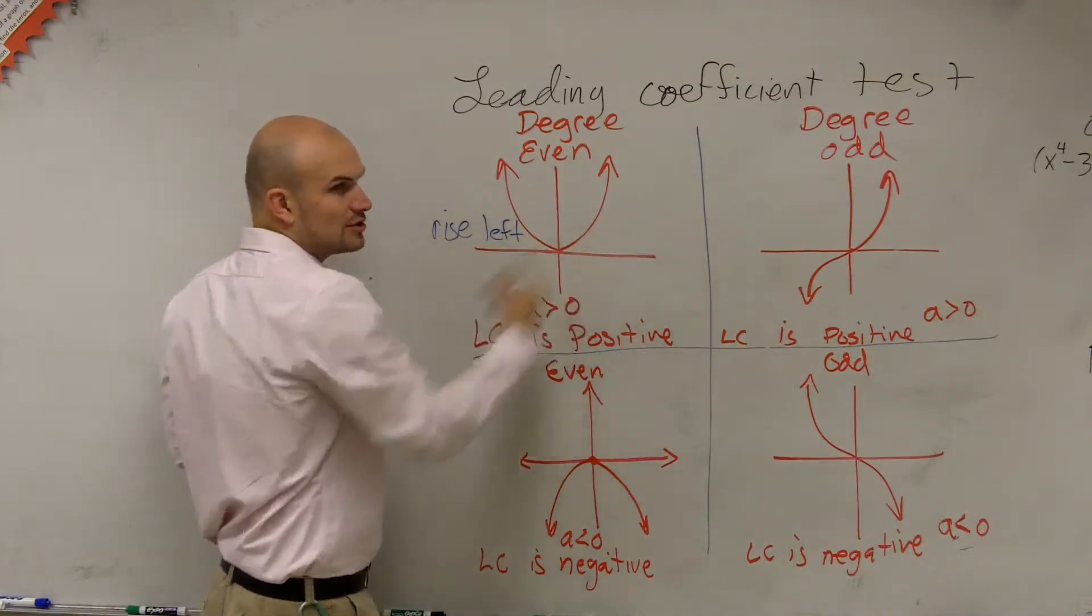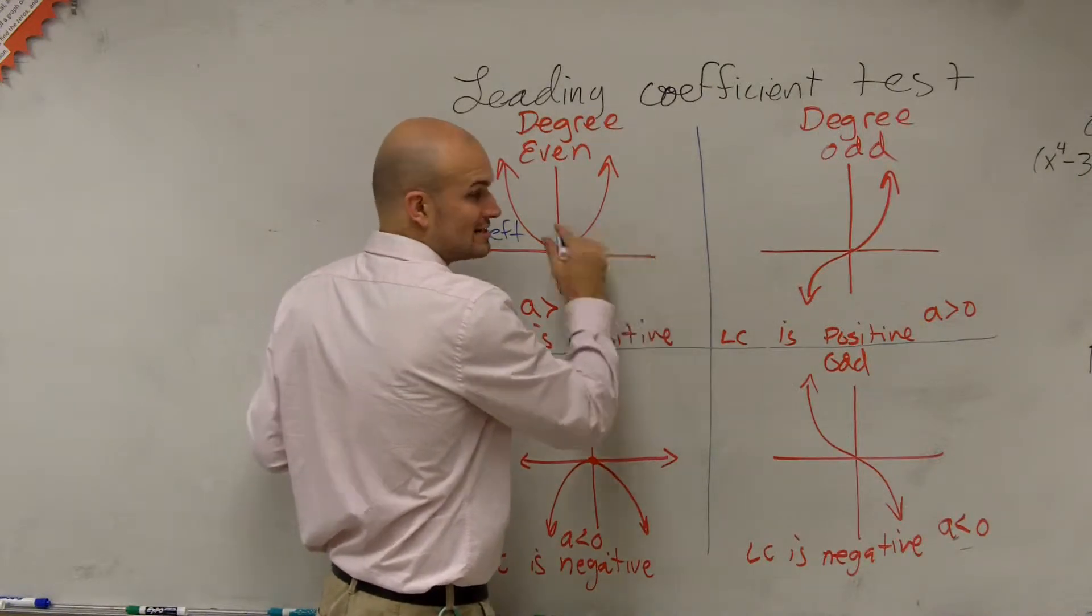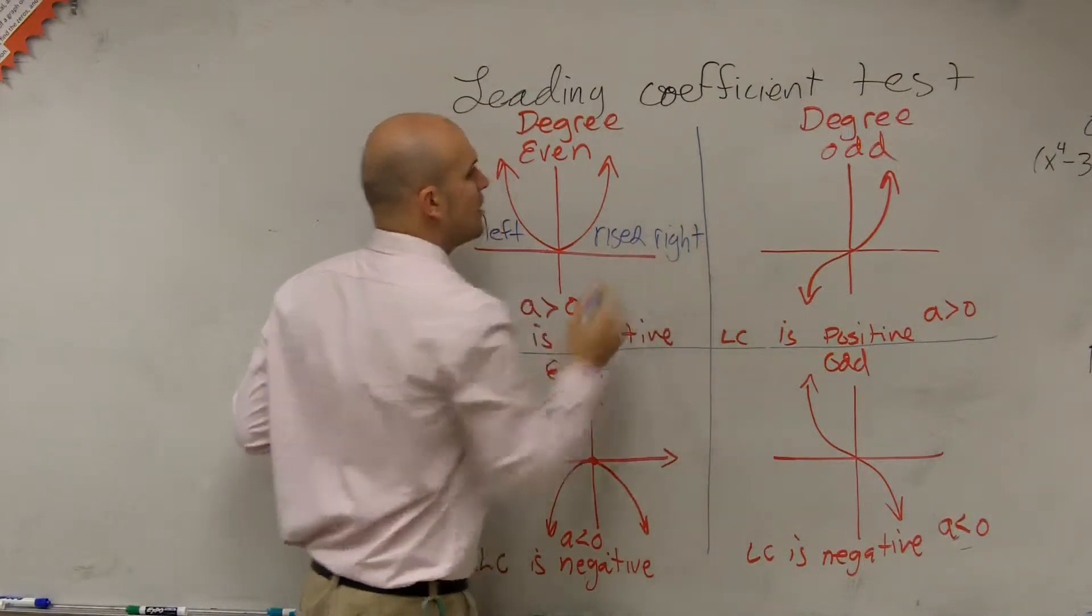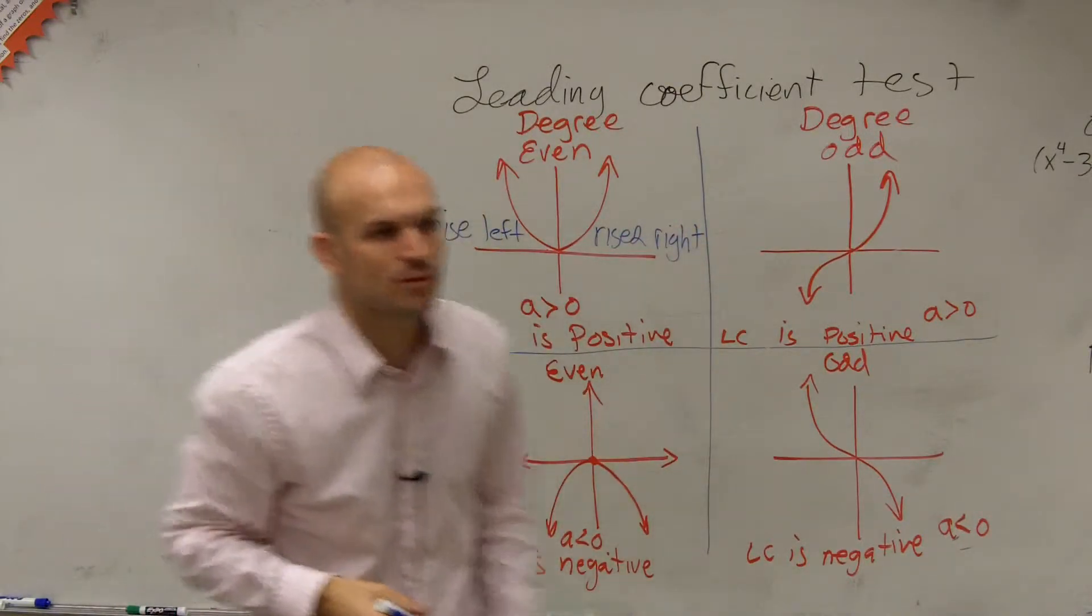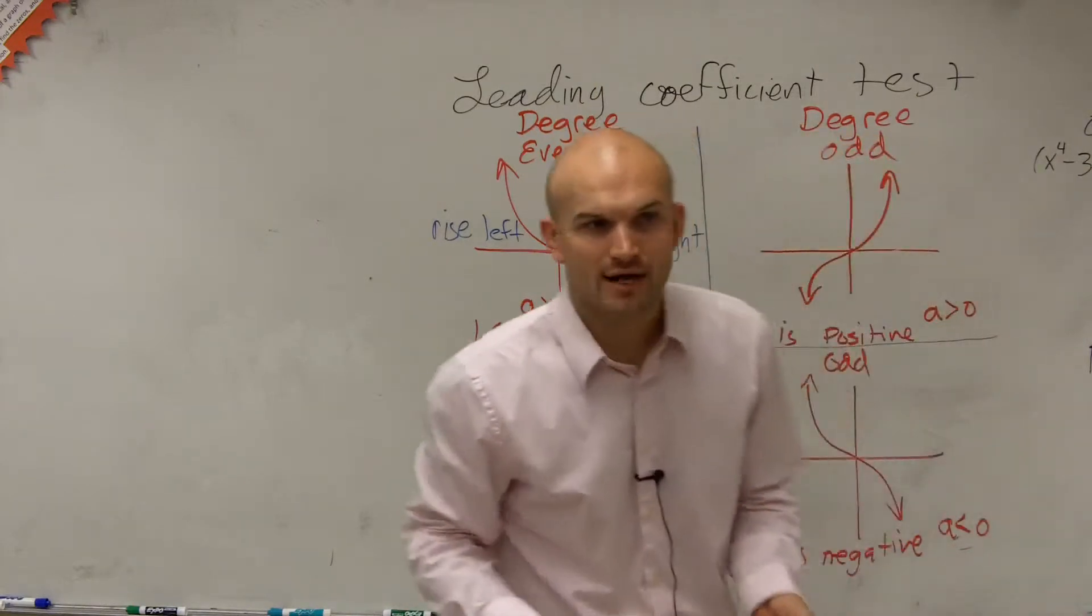And what about as I go to the right? Is it going to rise or fall? As I go to the right, the graph rises to the right. So I might ask you to describe what we call the end behavior of the graph. And guess what?